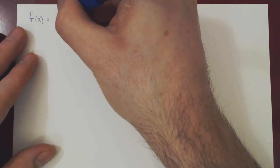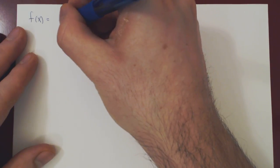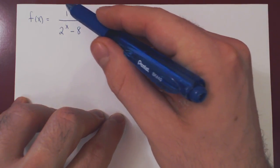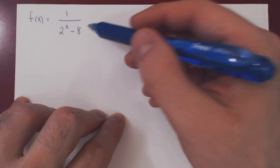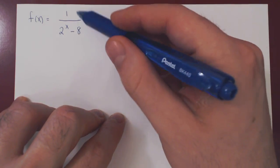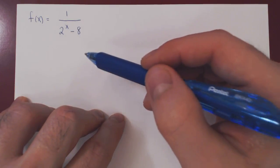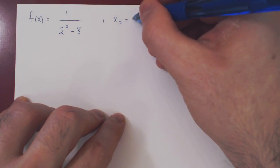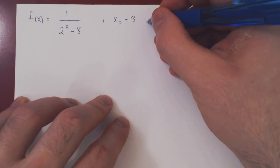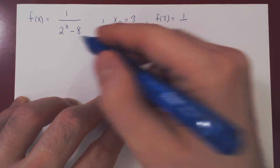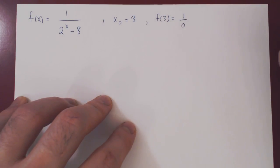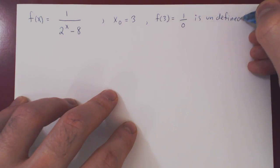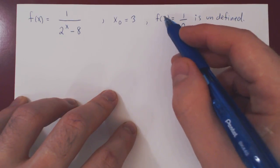Let's consider another example of an infinite discontinuity. Our function is f(x) = 1 over (2^x minus 8). The numerator 1 is defined everywhere, and 2^x minus 8 is defined everywhere, but we must avoid dividing by 0. Setting 2^x minus 8 = 0 gives 2^x = 8, therefore x = 3. So a possible point of discontinuity is x₀ = 3. Indeed, f(3) = 1 over (2³ minus 8) = 1/0, which is undefined.